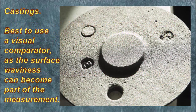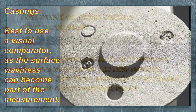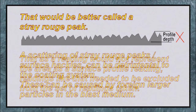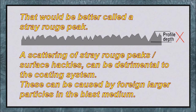You can see here the natural surface of the corroded steel. You may be able to use Testex tape and a needle profile gauge in this area, although the pits and hollows become part of the measurable profile — best to use a visual profile comparator. Castings: best to use a visual comparator as the surface waviness can become part of the measurement. What might be called profile depth there would be better called a stray rogue peak, and would not represent the area as a surface profile reading.